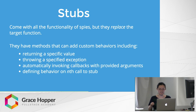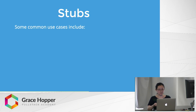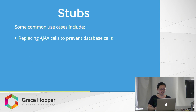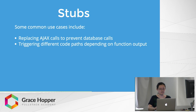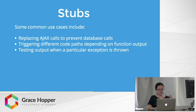You can even define the behavior of the stub on the nth call to that stub. When would you want to use stubs? You could use them to replace AJAX calls to prevent hitting the database, trigger a different code path depending on the function output, or test what happens when a particular exception is thrown.